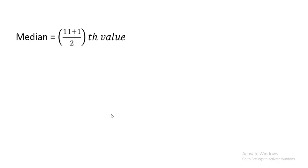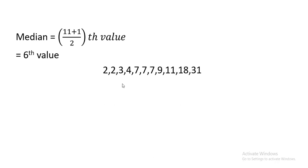Using the formula: (n + 1) / 2 = (11 + 1) / 2 = 6. This gives us the 6th position. Going back to the arranged data and counting to the 6th value: 1, 2, 3, 4, 5, 6 — the 6th value is 7. So the median is equal to 7.